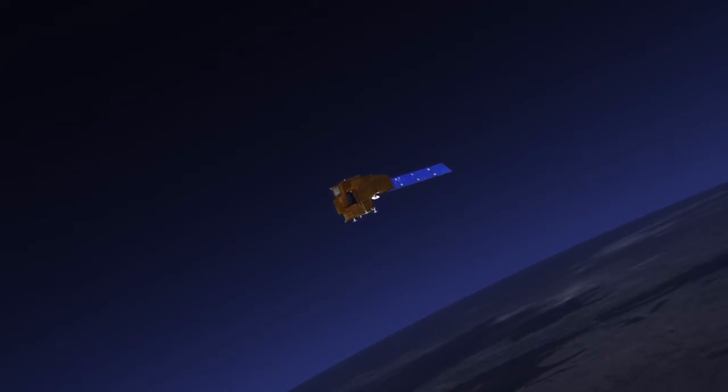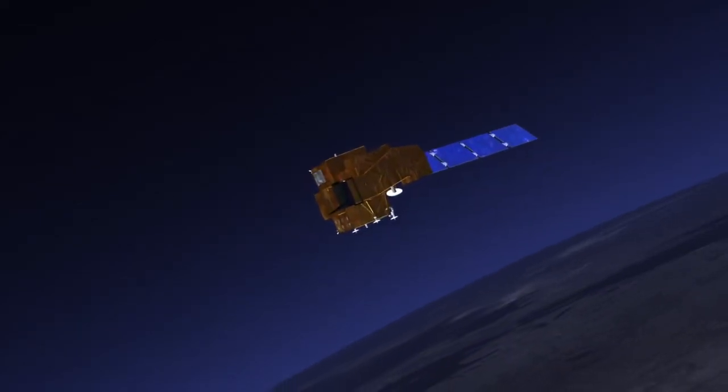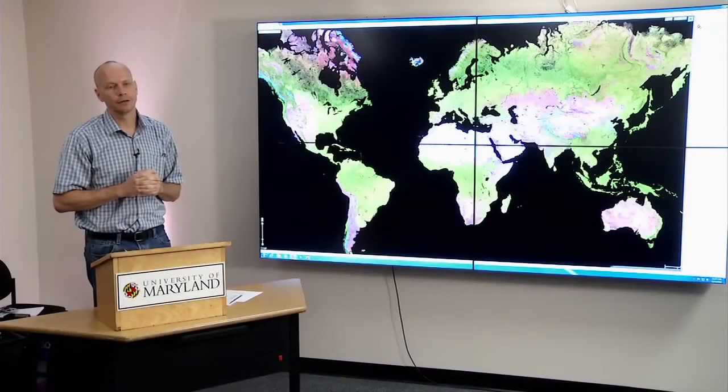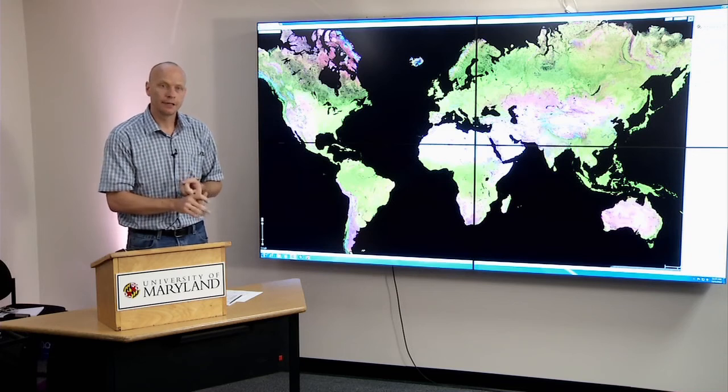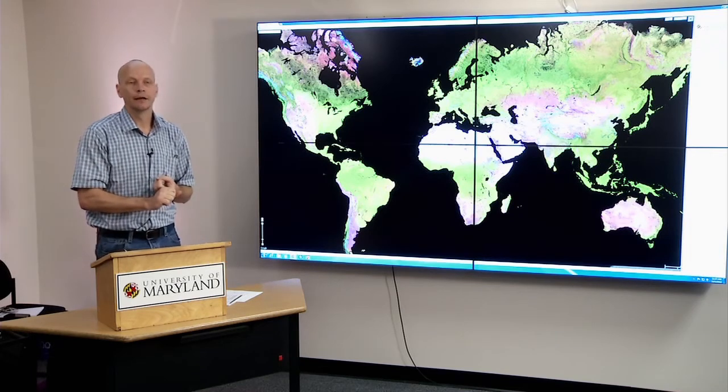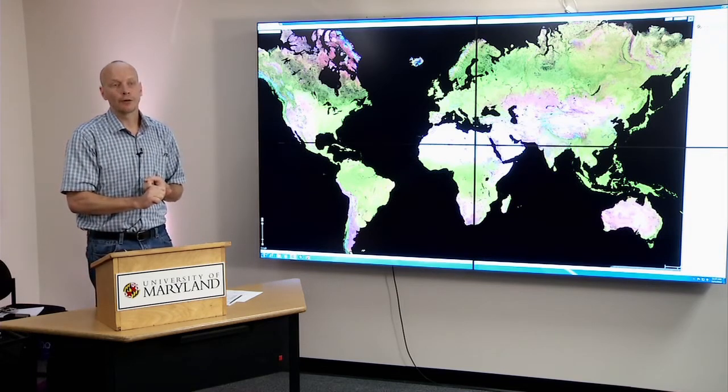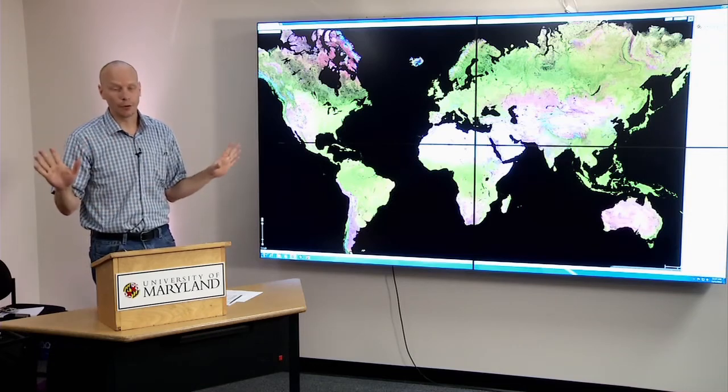There's three things that changed in the recent past that allowed us to do a global scale Landsat, which is 30-meter characterization of the land surface. First is the last Landsat sensor, ETM Plus, on Landsat 7 satellite had a global acquisition strategy. So we had observations everywhere.